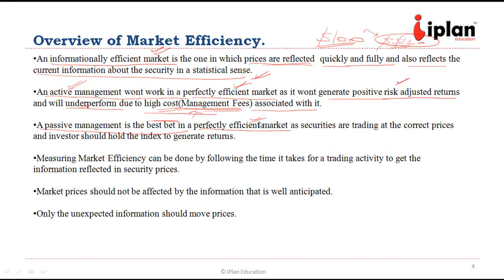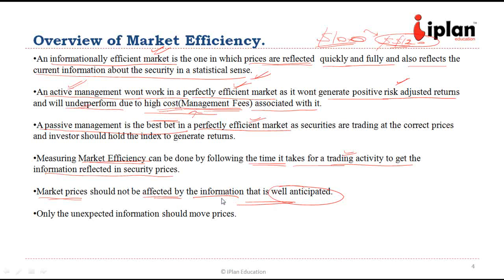Market efficiency can be measured by following the time it takes for information to be reflected in prices. The price will move from $100 to $120 very quickly through trading activity. As soon as the information comes, all traders would like to buy at even a higher price and the information is reflected immediately. Market prices should not be affected by well-anticipated information — only confirmed, unexpected information should affect the price, and the time taken should be very short if the market is efficient.